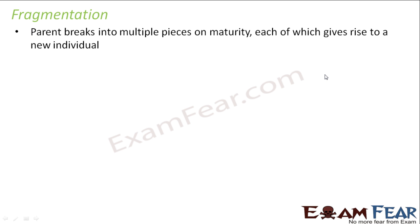Let us talk about fragmentation now. It is derived from the word fragment. Here the parent breaks into multiple pieces on maturity, and each piece gives rise to a new individual. The parent will break itself into many pieces — each piece is nothing but a fragment. Since the parent breaks itself into many fragments, this process is called fragmentation. Nobody externally breaks the organism; as soon as the organism becomes matured, it breaks itself into many pieces, and each piece grows to form a new individual.